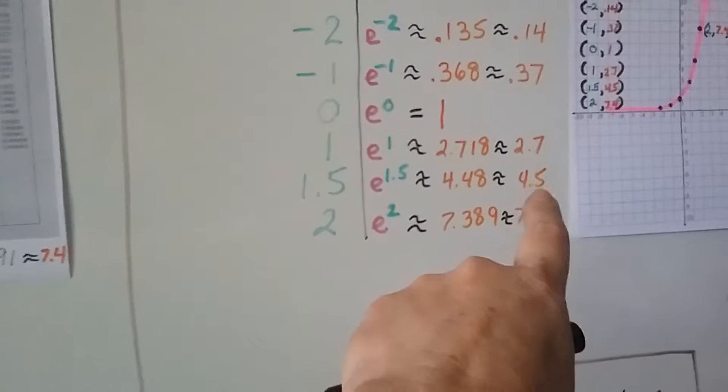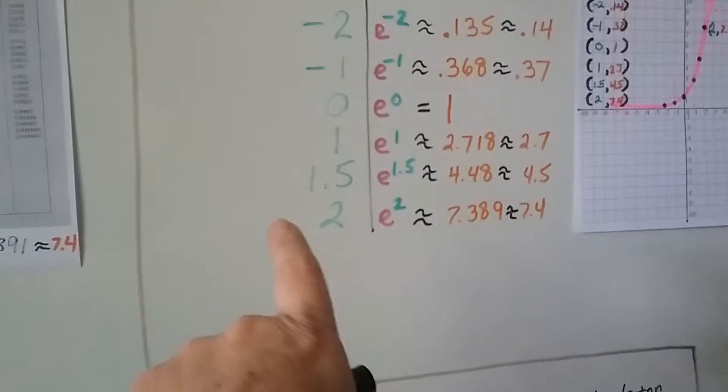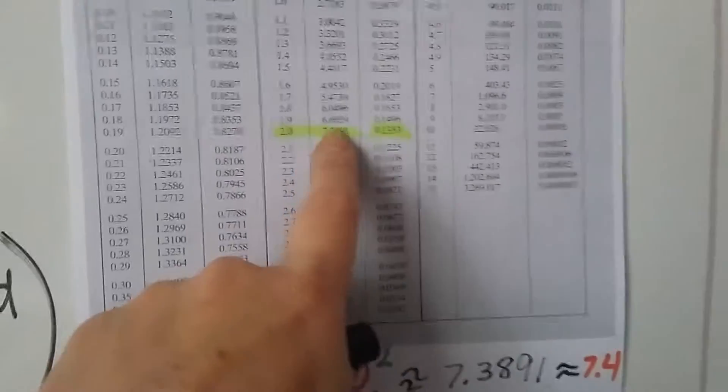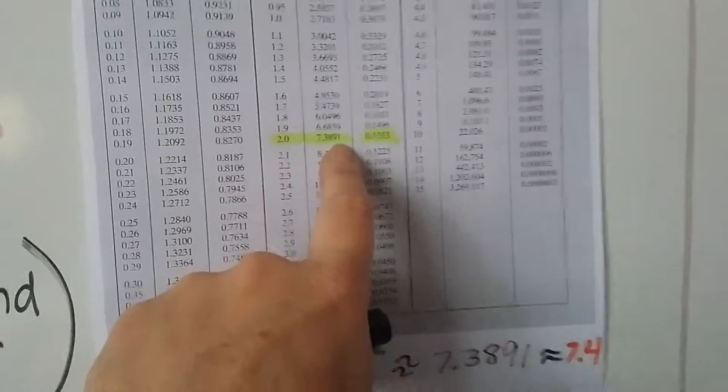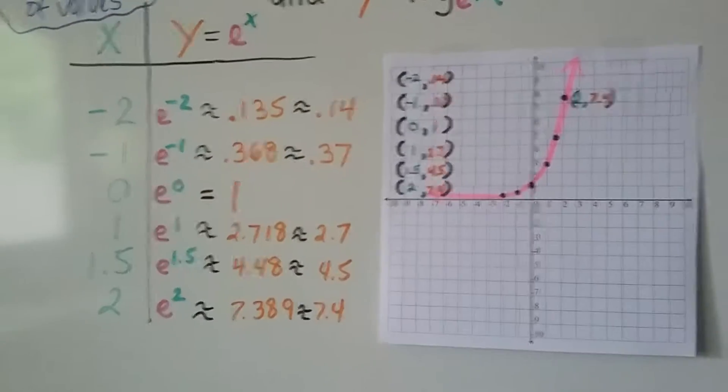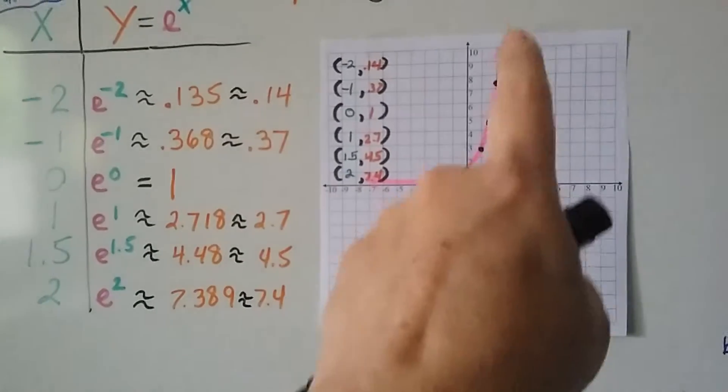If it's 1.5, it's going to be approximately 4.5. If it's a 2, it's going to be approximately a 7.4. 7.3891. We can round it to a 7.4, and now we've got our ordered pairs. And now we can graph this.